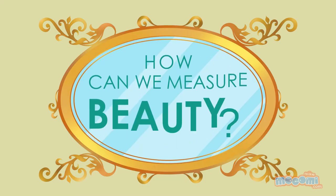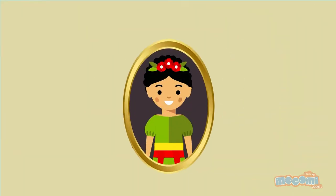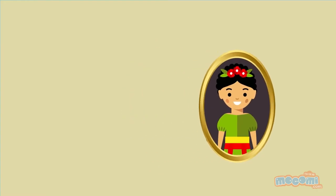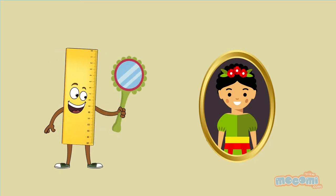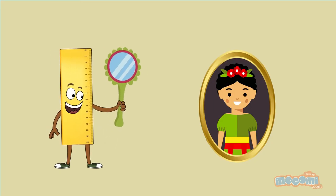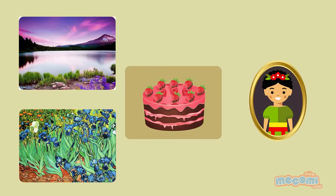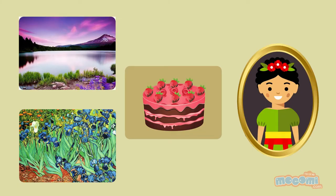How can we measure beauty? To understand if beauty is measurable, let us first understand the terms measure and beauty. Measurement means to define something in a clear and precise way. Beauty refers to the quality of being pleasing, especially to look at.